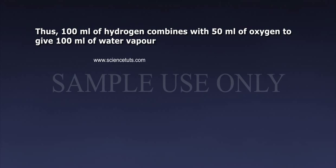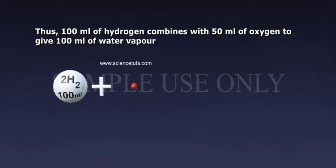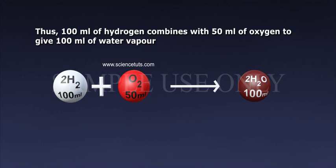Thus, 100 ml of hydrogen combines with 50 ml of oxygen to give 100 ml of water vapor. Hydrogen, 100 ml, plus oxygen, 50 ml, gives water, 100 ml. Thus, the volumes of hydrogen and oxygen which combine together, that is 100 ml and 50 ml, bear a simple ratio of 2 is to 1.